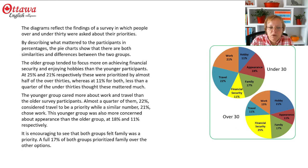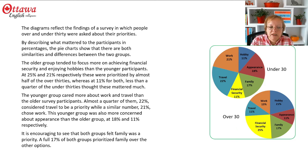The younger group cared more about work and travel than the older survey participants. Almost a quarter of them — 22% — considered travel to be a priority, while a similar number, 21%, chose work. This younger group was also more concerned about appearance than the older age group, at 18% and 11% respectively. It's encouraging to see that both groups felt family was a priority — a full 17% of both groups prioritized family over the other options.